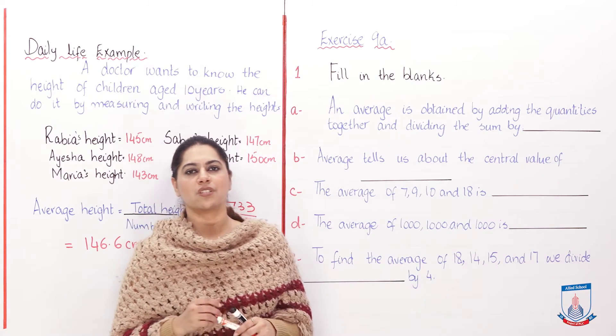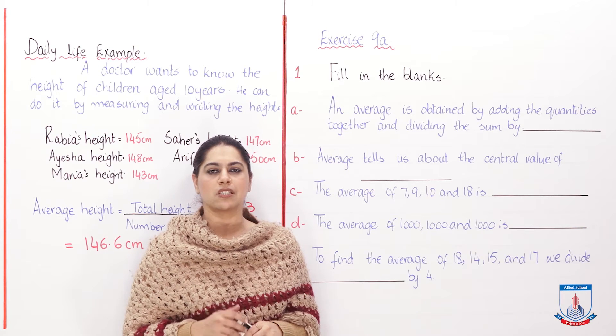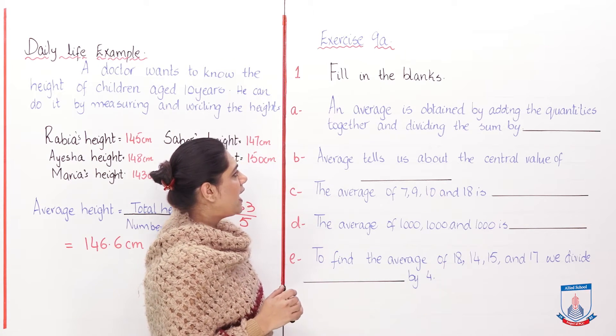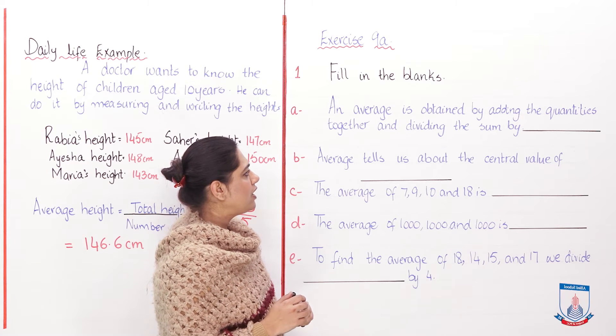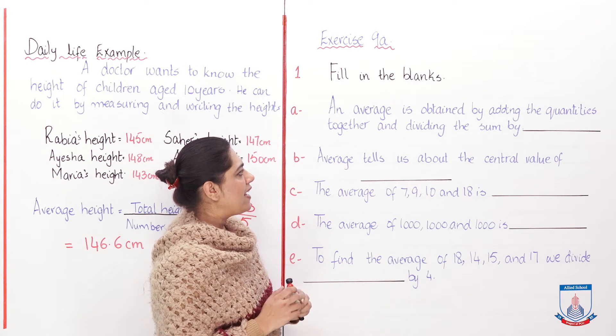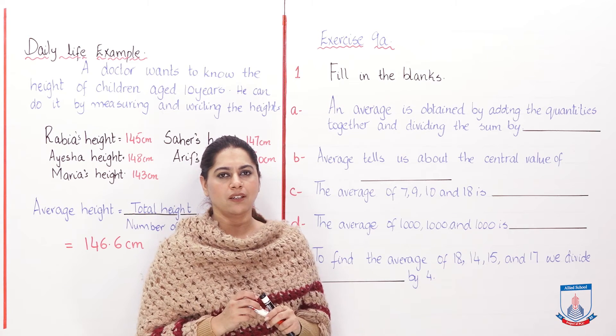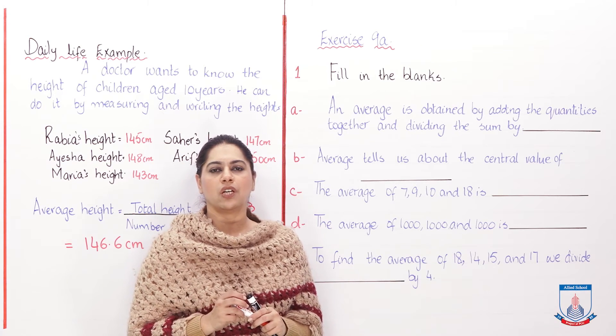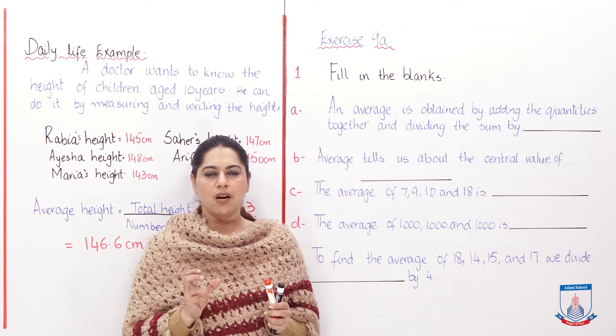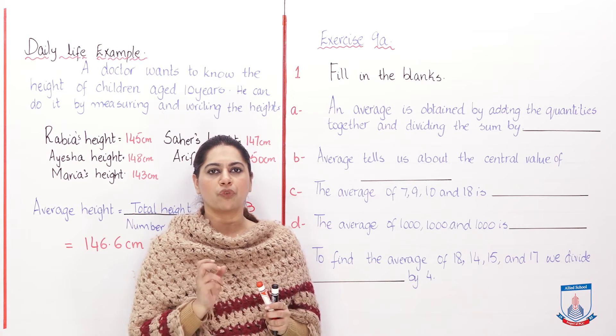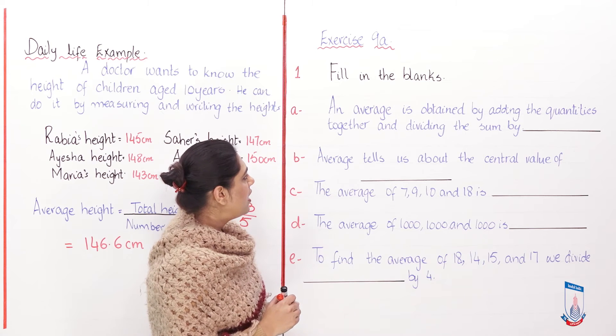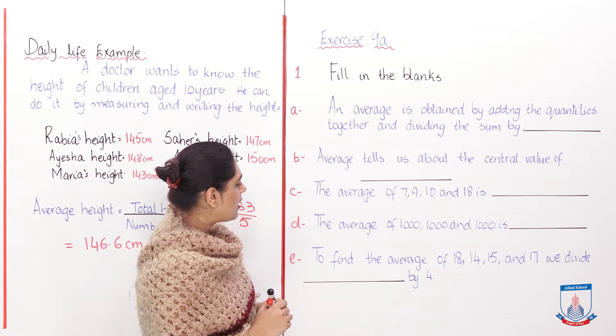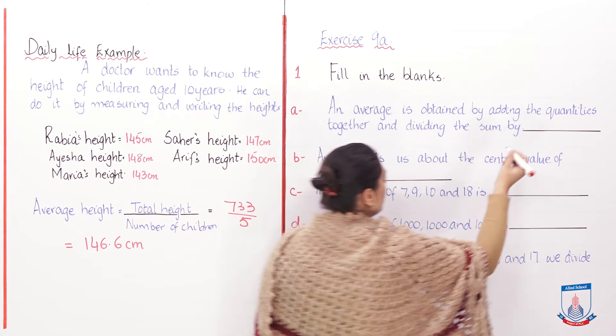So students, we are going to start with the exercise 9a. The first question is fill in the blank. First blank is: an average is obtained by adding the quantities together and dividing the sum by the number of quantities. Exactly, it is the definition of an average. What is average? You have to sum up and divide it by the number of quantities.